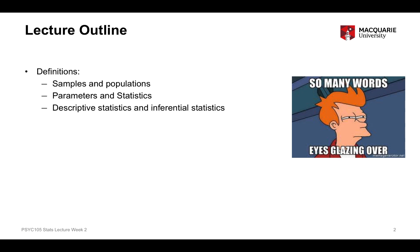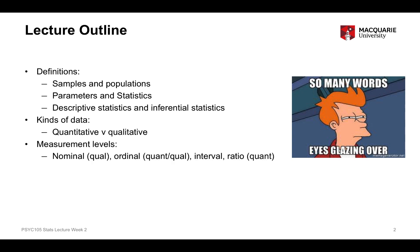The things we're talking about today are basically a whole lot of words and definitions. The topics include the distinction between a sample and a population, a parameter versus a statistic, and descriptive statistics compared to inferential statistics. We'll also talk about different kinds of data — quantitative as opposed to qualitative — and different levels of measurement: nominal, ordinal, interval, and ratio variables.